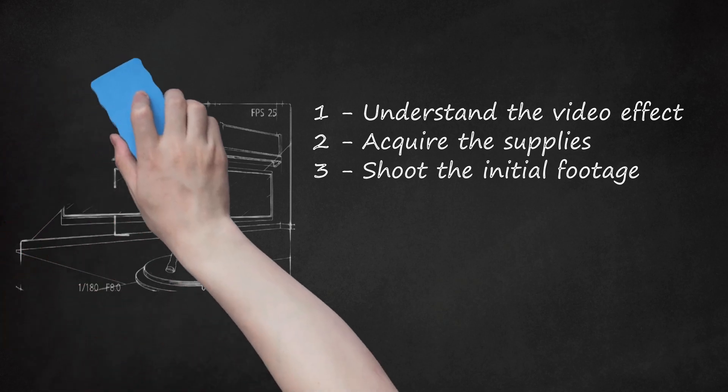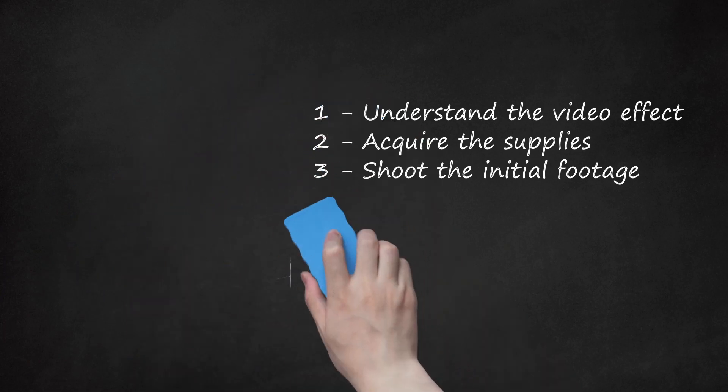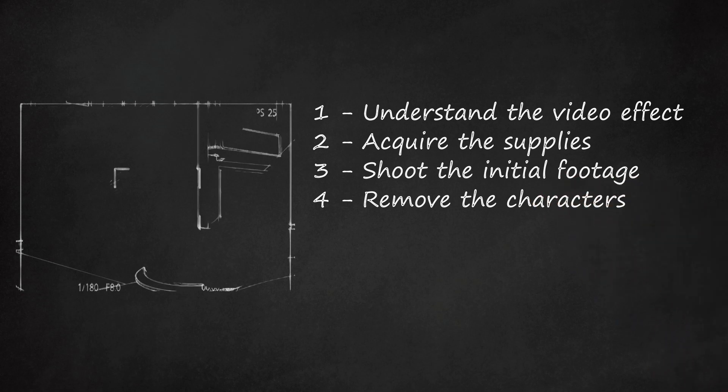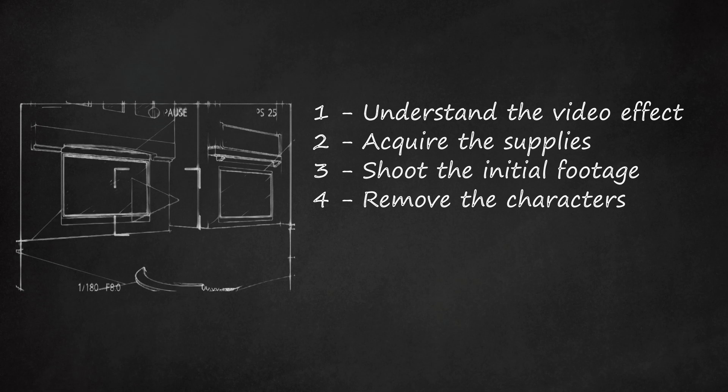It might help if they count down, 3, 2, 1 and then cut the scene. Step 4 - Remove the Characters. Have everyone in the shot leave the camera's eye. Check on the camera's display monitor to ensure that the shot is only the background.